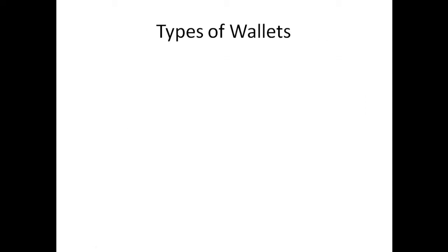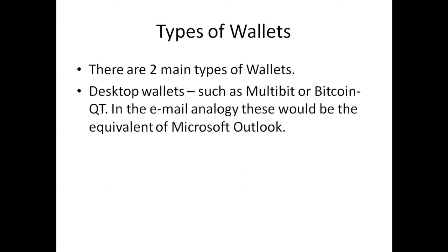Now we're going to look at the main types of Bitcoin wallets. First, you have desktop wallets — software which you download and install on your local machine. An analogy would be Microsoft Outlook for email: you install it on your machine and your data is stored locally. Examples of desktop wallets include MultiBit and Bitcoin Qt, which is the original Bitcoin wallet.